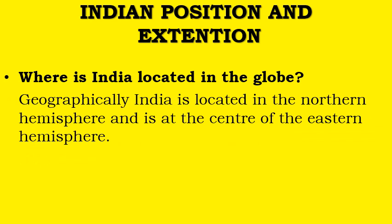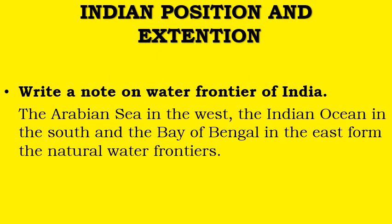Where is India located on the globe? Geographically, India is located in the northern hemisphere and is at the center of the eastern hemisphere too. Write a note on the water frontier of India: the Arabian Sea in the west, the Indian Ocean in the south, and the Bay of Bengal in the east form the natural frontiers.